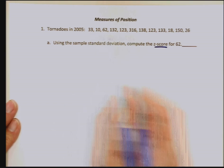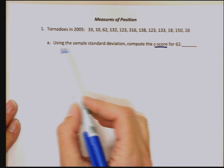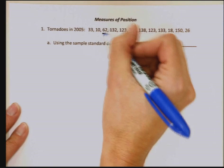I already have this data entered into my calculator, into one of my lists. The question says, using a sample standard deviation, compute the z-score for 62.